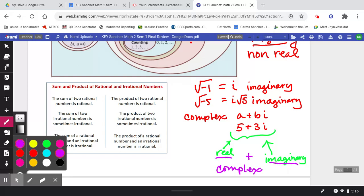And so this 5 plus 3i, if we asked you to classify this, you would say it's a complex number. You could say it has part real and part imaginary components.